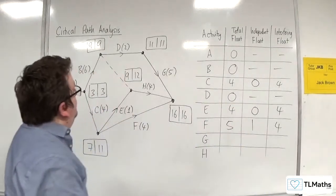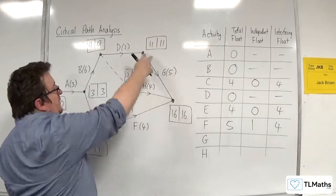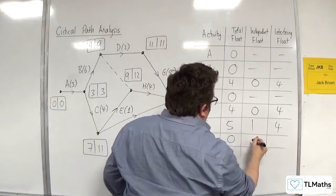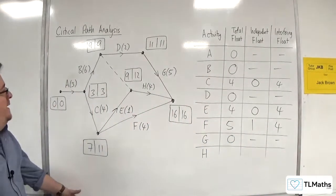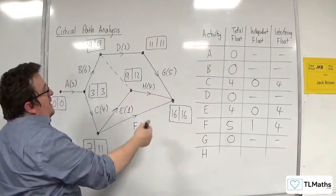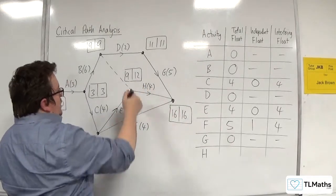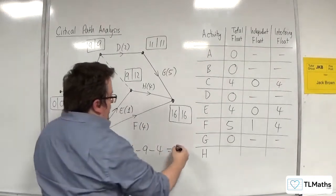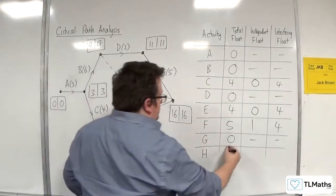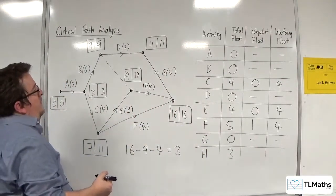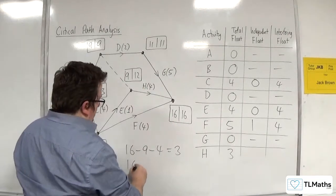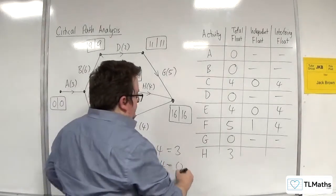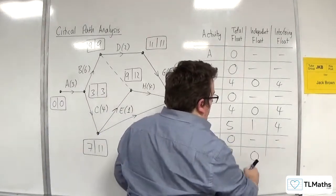G: we've got 11, 11 and 16, 16, and the duration is 5. So G is critical. And finally, H is not critical. The total float is 16 take away 9, take away the duration 4, which gives me 3. The independent float is 16 take away 12, take away 4, which equals 0. And 3 take away 0 is 3 for the interfering float.